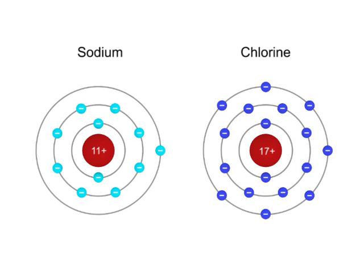Each atom is looking to become more stable. Sodium by giving up its single loosely held electron in its outer shell and chlorine by gaining an electron to increase its outer shell number to 8.